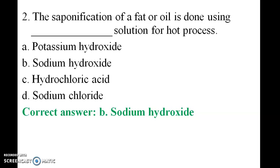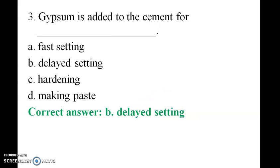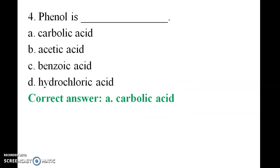The options are: potassium hydroxide, sodium hydroxide, hydrochloric acid, sodium chloride. Gypsum is added to cement for delayed setting — the answer is delayed setting.